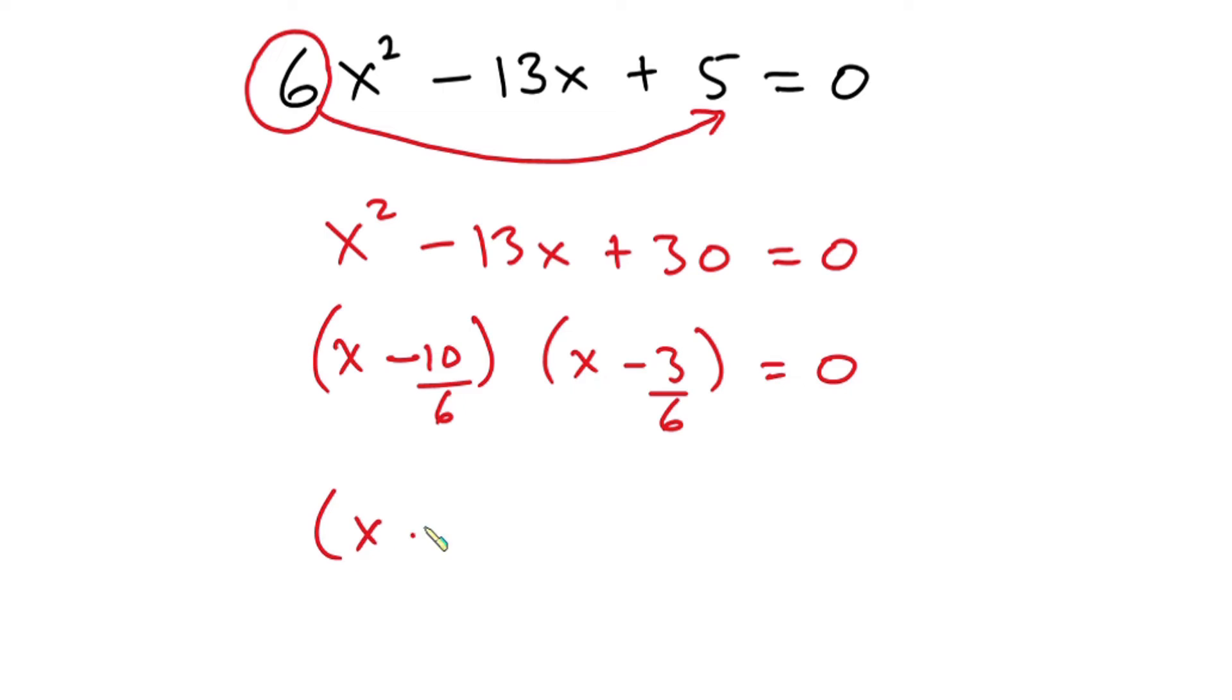So we have x minus, 2 goes here 5, so we have 5 divided by 2 goes here 3. So we're going to have 3 here. Then this side we're going to have x minus 1 over 2 and this is equal to 0.